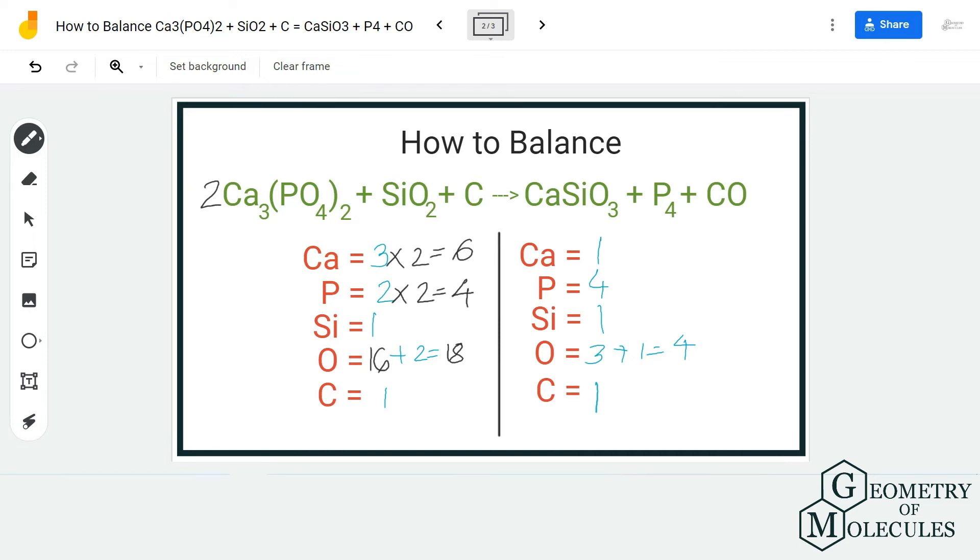We can multiply this by putting a coefficient six over here, and in turn it will change the number of atoms of calcium, silicon, and oxygen as well. So now we have one into six, six atoms of calcium for both the sides. For silicon it would be six, and for oxygen it will be 18 plus one, which is 19.